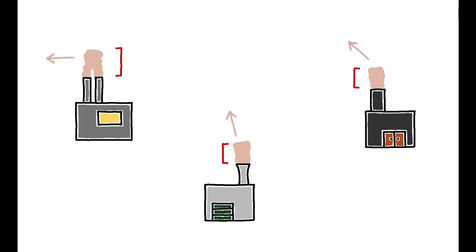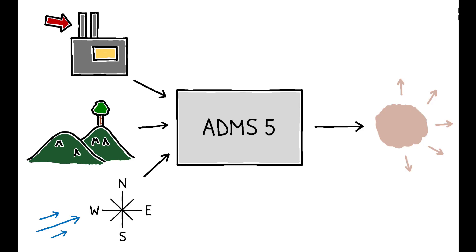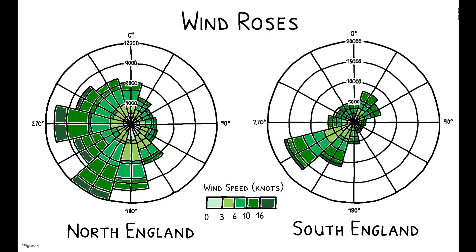To then track where this pollution traveled once it was released, they use the ADMS-5 dispersion model. The ADMS-5 models atmospheric dispersion given a number of inputs, including characteristics of the emission source, topographical features of the surrounding terrain, and, crucially, wind direction and intensity. This figure shows the wind data used to model dispersion in northern and southern England, and shows that winds blow primarily from the west-southwest direction.